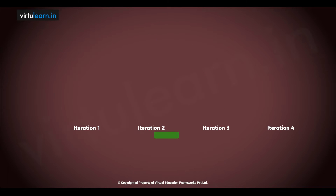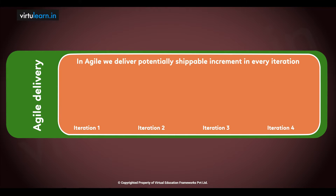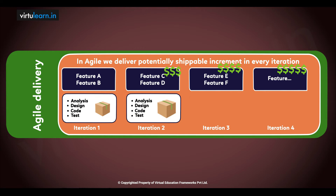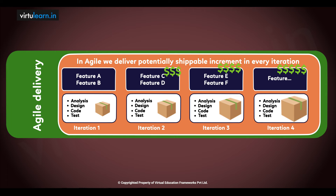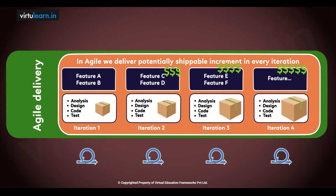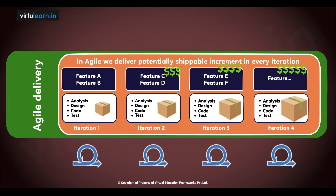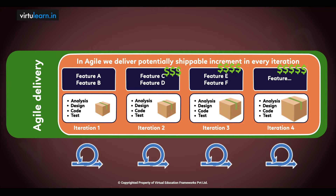We look at some key high-value features which we have here, which will be delivered — maybe five features, six features, or eight features, depending on your team size and what they can do. With one increment done, we then take another bunch of valuable features to our customers and deliver them. Like that, we deliver in an iterative model so that incremental software development happens and is delivered to the customer.